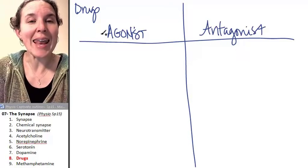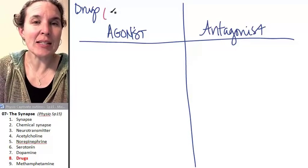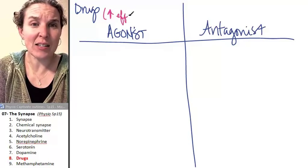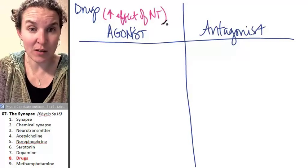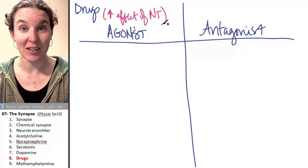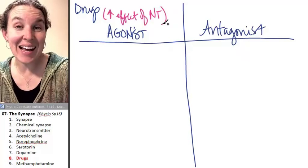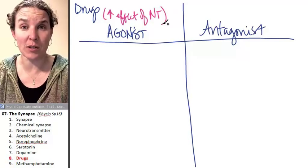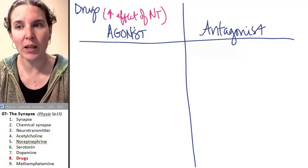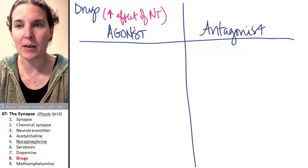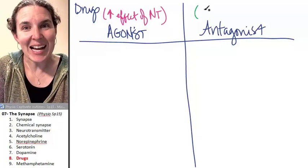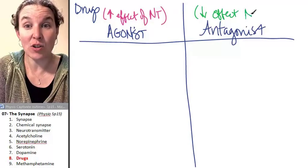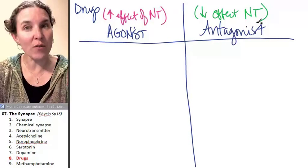Remember, an agonist is something that's going to increase the effect of a neurotransmitter. If a drug is an agonist to a neurotransmitter, it's going to basically do the same thing that the neurotransmitter does. And there's several ways that this can happen. If a drug is an antagonist, it's going to decrease the effect of the neurotransmitter. And there's several ways that that can happen.